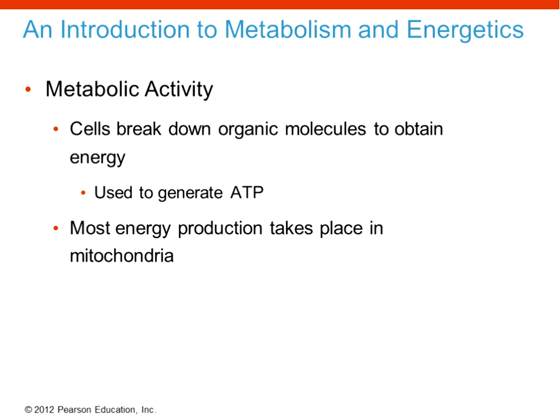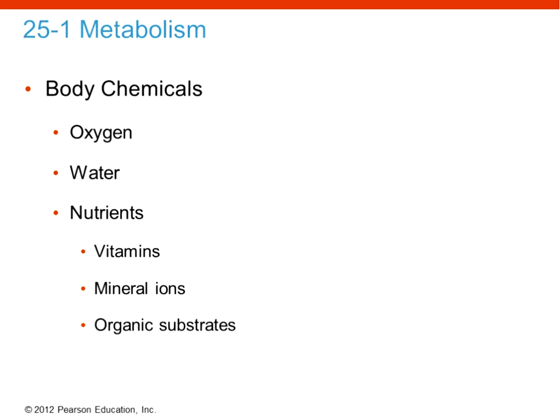Metabolic activity cells break down nutrients that you acquire to obtain energy, and they're used to generate ATP. Most energy production occurs in the mitochondria. Mitochondria take sugar or fat, feed it in with oxygen, and produce ATP. ATP is what's used for a lot of activities — the powerhouse of the cell type of activity.